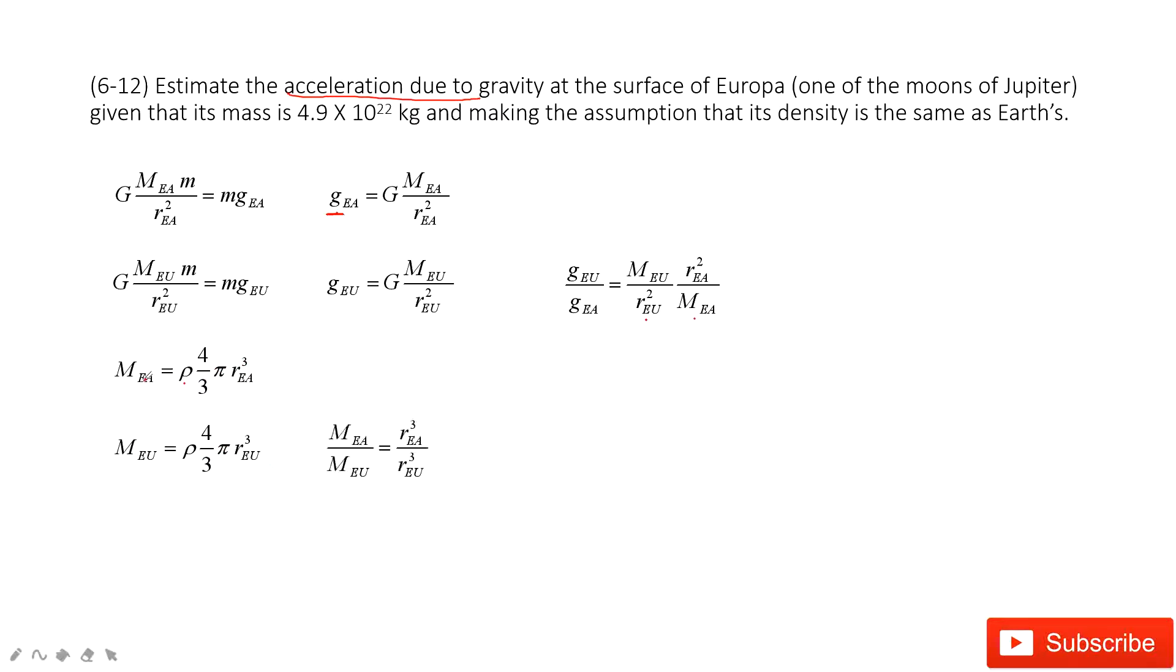Now we can get, if we take the ratio, mass of Earth divided by mass of Europa, you can find that because the density is the same, the ratio is just equal to rEarth cubed divided by rEu cubed, the power is 3. Now we input this one inside.